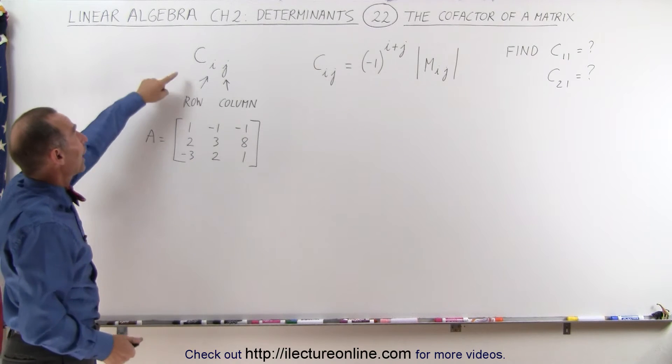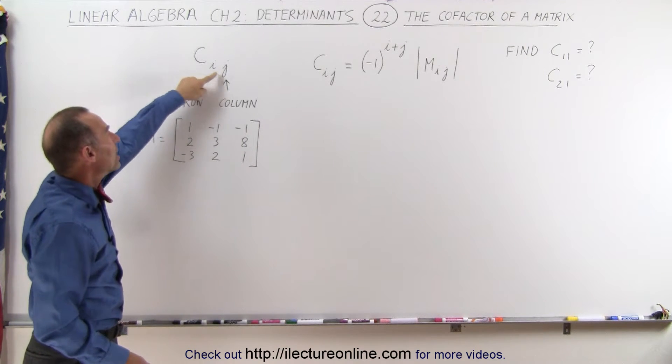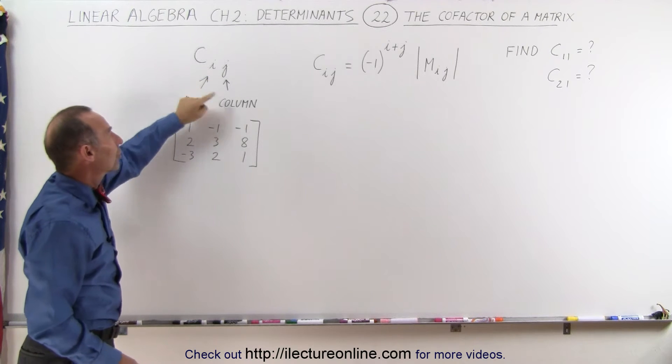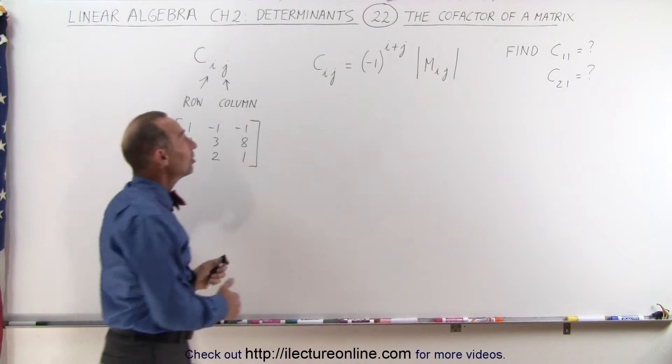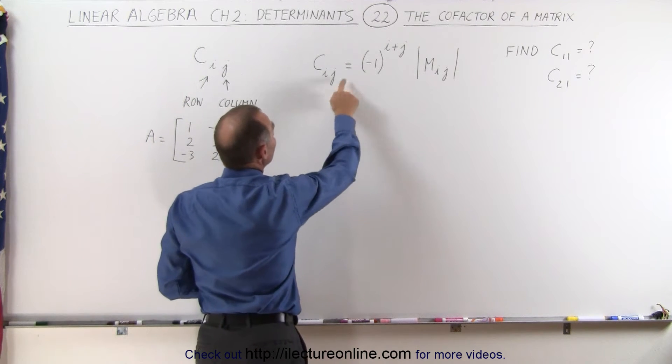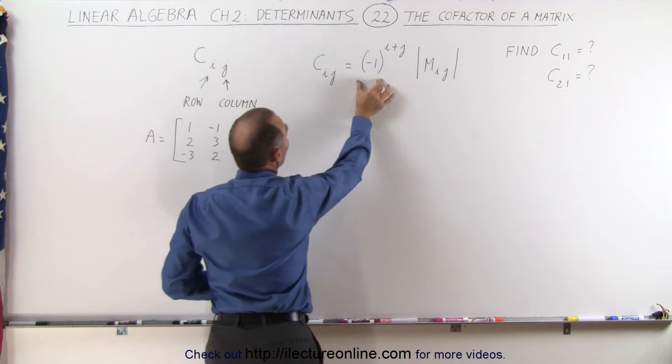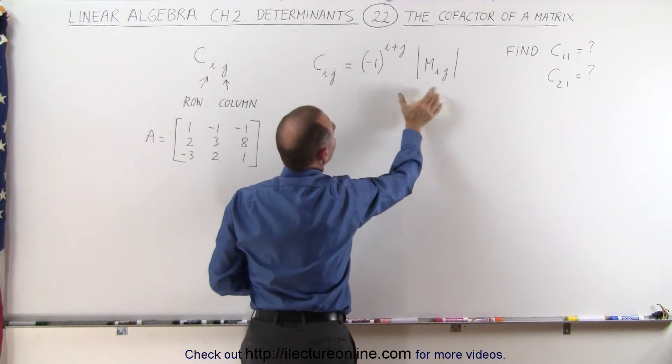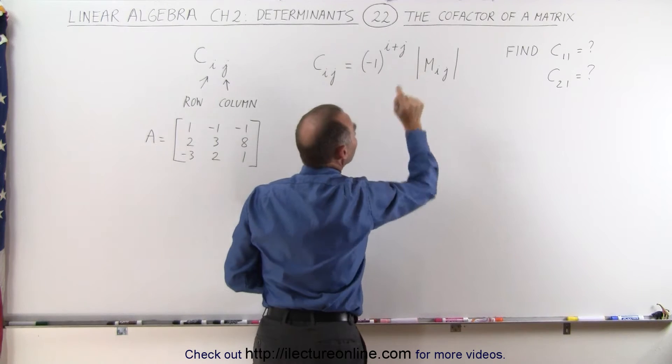First of all, we write it with a c and the subscripts i and j. i is the row, j is the column. And the definition is that cij is equal to negative 1 raised to the i plus j power times the determinant of the minor ij.